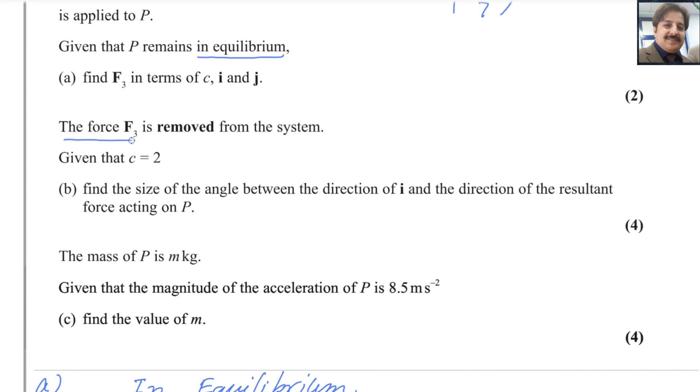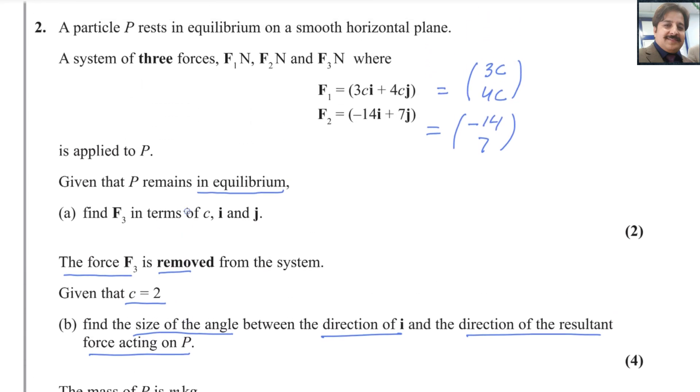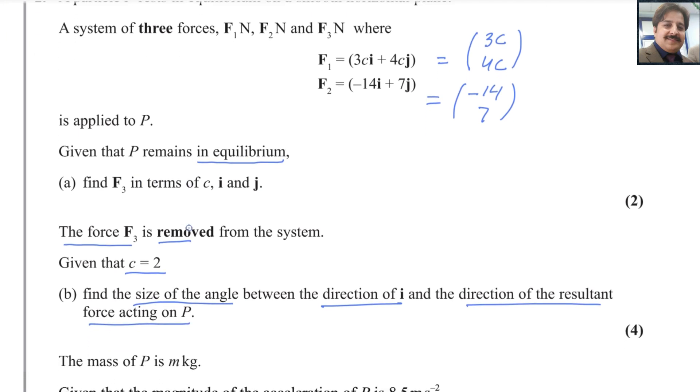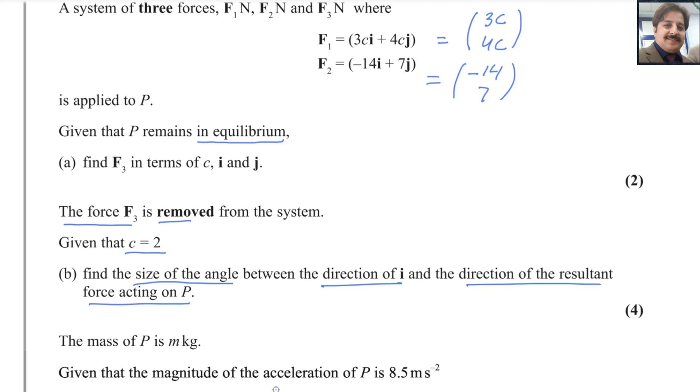Now the force F3 is removed from the system. Given that c equals 2, find the size of the angle between the direction of i and the direction of the resultant force acting on P. Before when three forces were acting there, the system was in equilibrium. Now F3 is removed, there will be some kind of a resultant force.